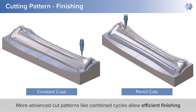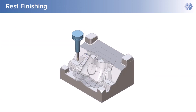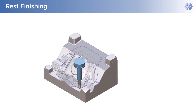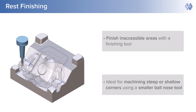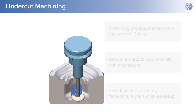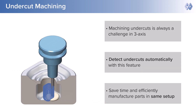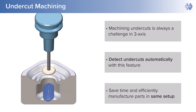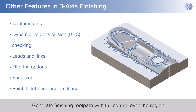Pencil cut finishing strategy automatically detects corners in the part and supports generating single or multi-pencil cuts. The finishing strategies also provide additional features to allow users full control over the toolpath. Rest finishing option allows the tool to reach and finish inaccessible areas. Undercut machining detects undercuts in the part which can be machined using a lollipop or disc cutter. Similarly, there are many other features in 3-axis finishing.